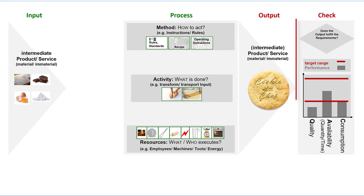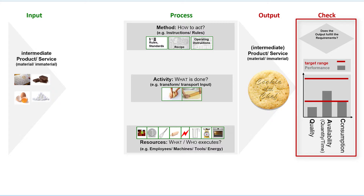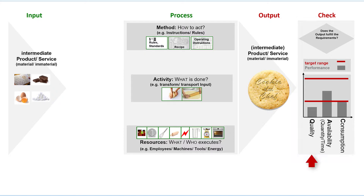All customers have individual requirements for the outputs. You, for example, will probably review and evaluate the taste, ingredients, weight, size, color, and texture of cookies you bought. These requirements are aimed at the quality attributes of the cookies. However, the customer may also need a certain number of cookies at a certain time and place — these are the requirements for the availability of cookies.